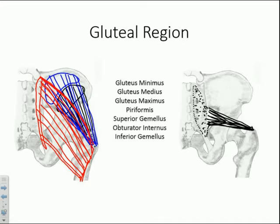Next, we have a set of three muscles discussed pretty much interchangeably. In the middle is obturator internus — we discussed obturator externus previously. Obturator internus comes off the internal aspect of the obturator foramen. The fibers project straight out posteriorly and take a 90-degree turn to attach to the greater trochanter, this time along the medial surface proximal to the trochanteric fossa.